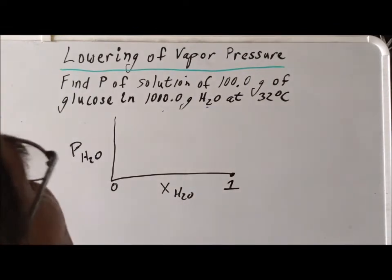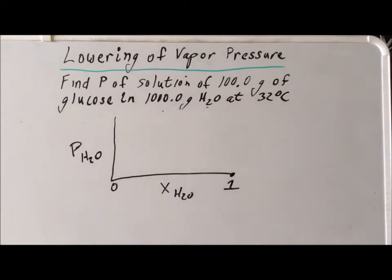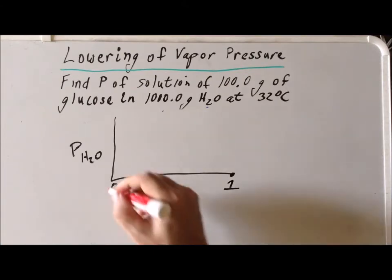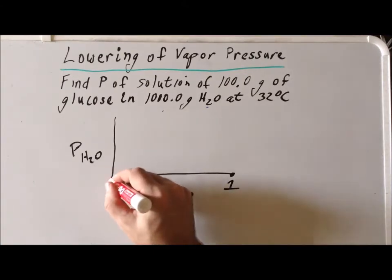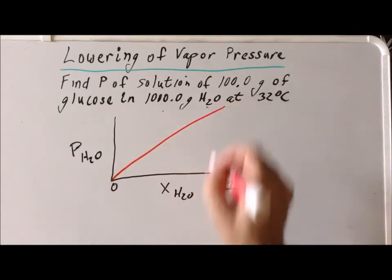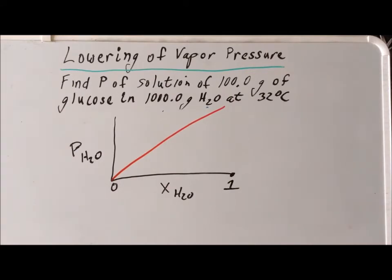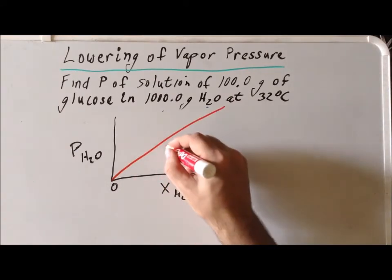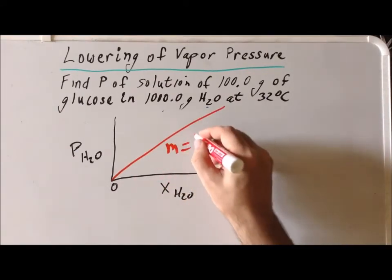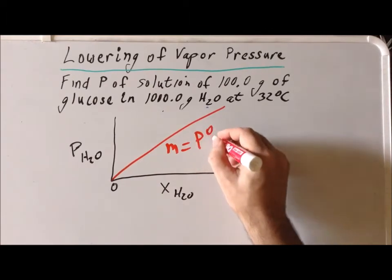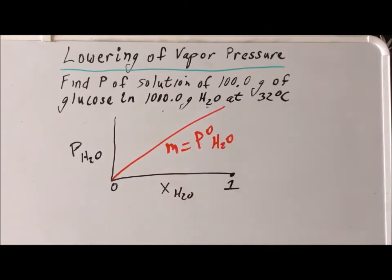Another way to understand that exact relationship is to plot as a graph the actual pressure of the solution versus the mole fraction of water. If we do that, we would get a straight line, and the slope is actually equal to the vapor pressure of pure water.